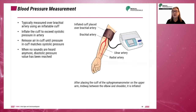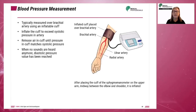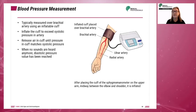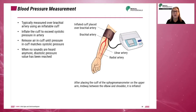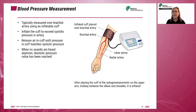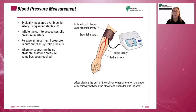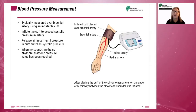Traditionally, blood pressure is measured over the brachial artery using an inflatable cuff. First, the cuff is inflated above the systolic pressure in the artery. Air is released slowly until the pressure in the cuff matches the systolic pressure, indicated by the sound of a beat. Continue to release the air until no sounds are heard — this is the diastolic pressure value.